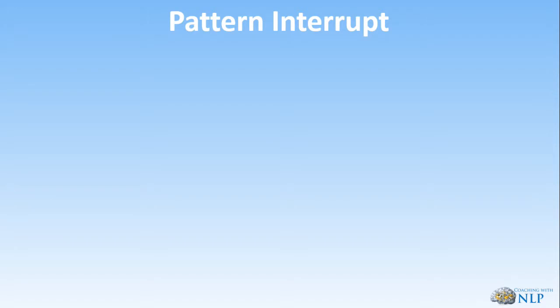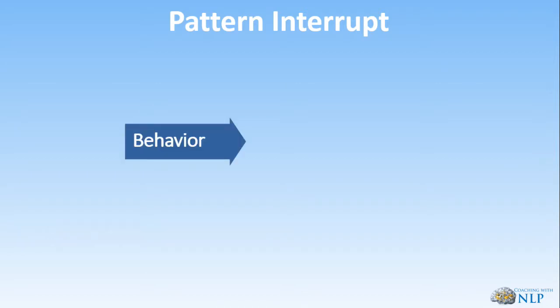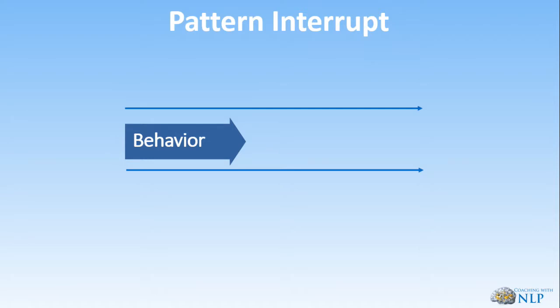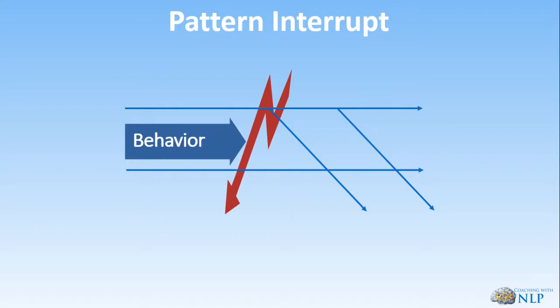Let's talk about a pattern interrupt — this is not in your manual so you might want to write this down. It's important for us to interrupt the pattern or the behavior somewhere close to the beginning of the behavior. Every behavior has a beginning and an end. Think of it like this: behavior is heading down a train track, and what we want to do is interrupt that pattern and change the behavior — send it down a new track.